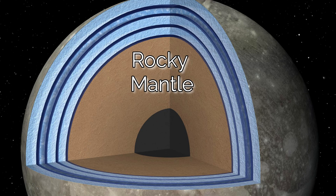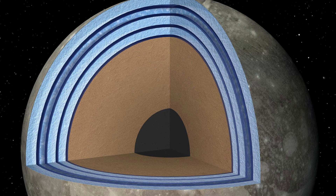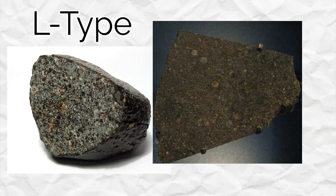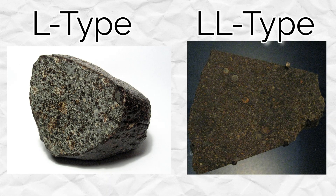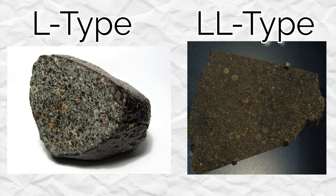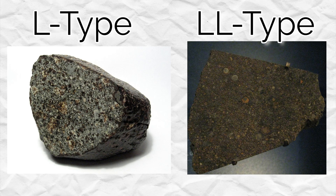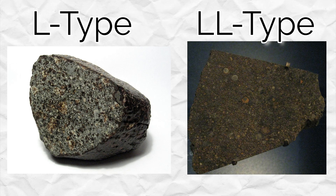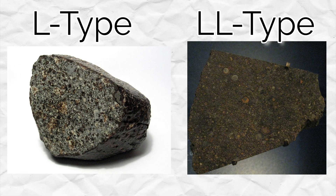Let us move up to the next layer, which is the rocky mantle. This is a spherical shell of silicate material that is most likely composed of more iron and chondrites. We believe these to be like L/LL ordinary chondrites, and what this implies is that most of the iron found in the mantle is iron oxide, with much smaller amounts of total and metallic iron. We also see this type of chondrite in meteorites.